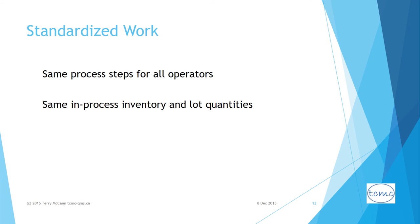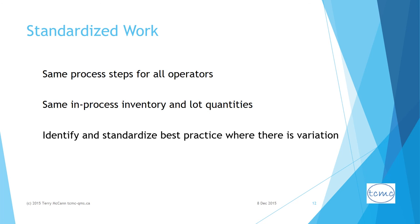Once the map is drawn, verify that each process and function is based upon standardized work. Are the process steps the same regardless of operator, including preparation steps? Is the in-process inventory the same, with the same lot quantities for process materials, components, consumables, and output? Without standardized work processes, you have no basis for improvement. The first improvement would be standardizing and documenting agreed-upon best practice for each value-adding activity, then following that standard until it gets improved and a new standardized process is documented.